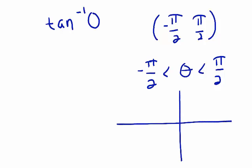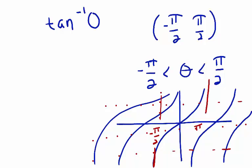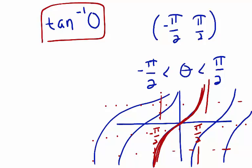Let's make a quick sketch of the tangent function. Here you can see that the function is not one-to-one, unless we restrict it to the values that we've determined, negative pi over 2 and pi over 2. By taking just this piece of the tangent function, it is one-to-one, and therefore we can find an inverse for tan inverse of 0.